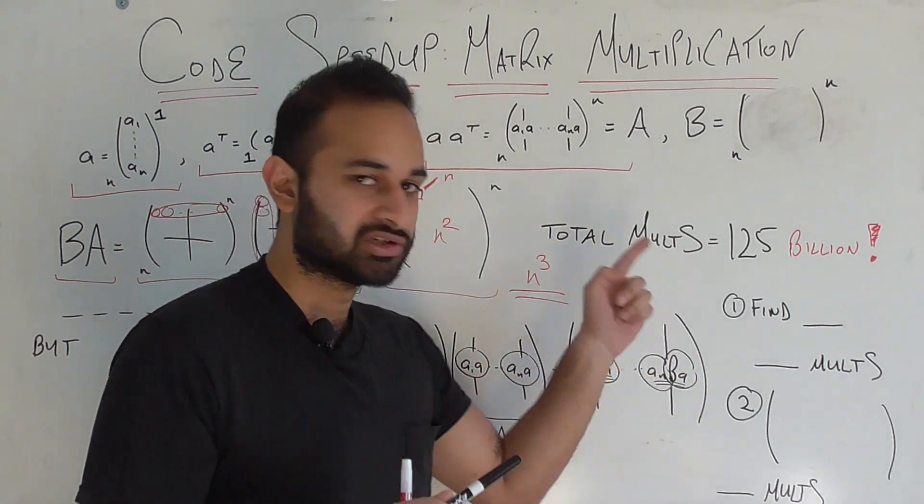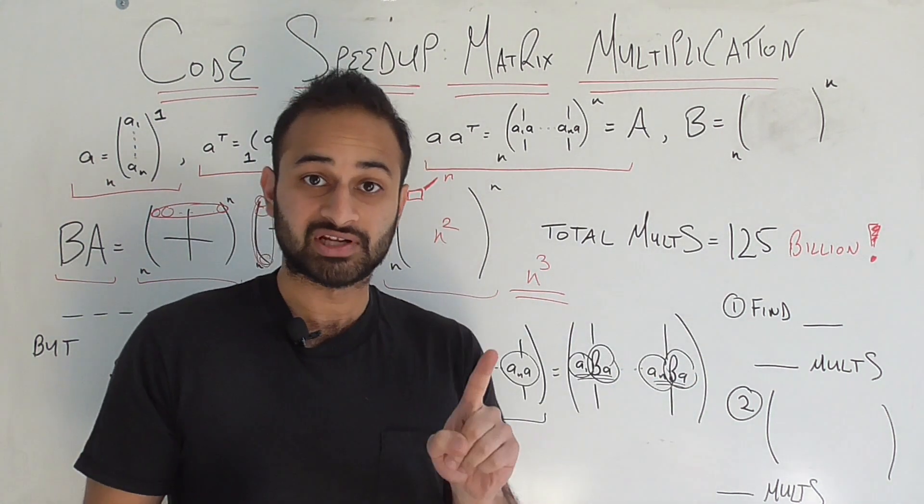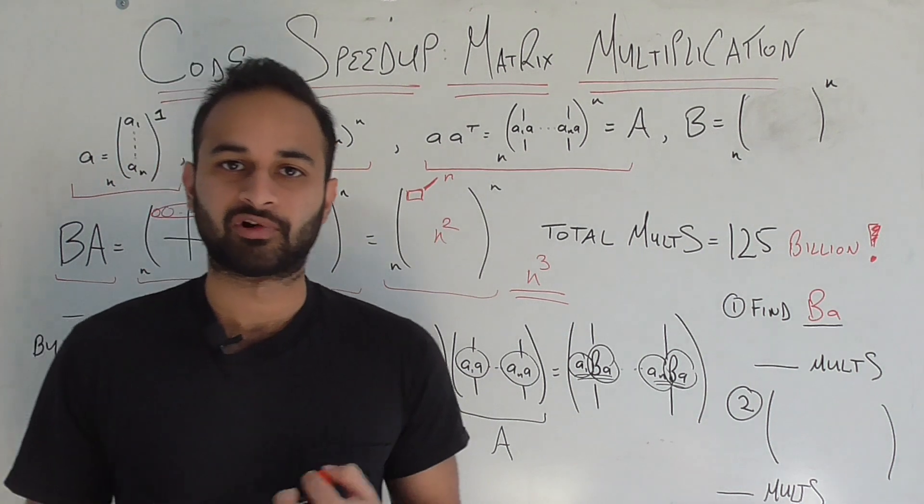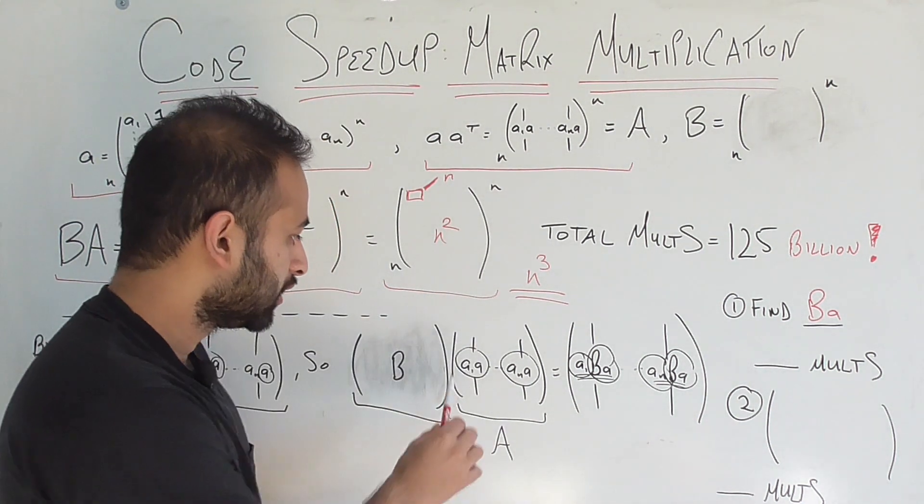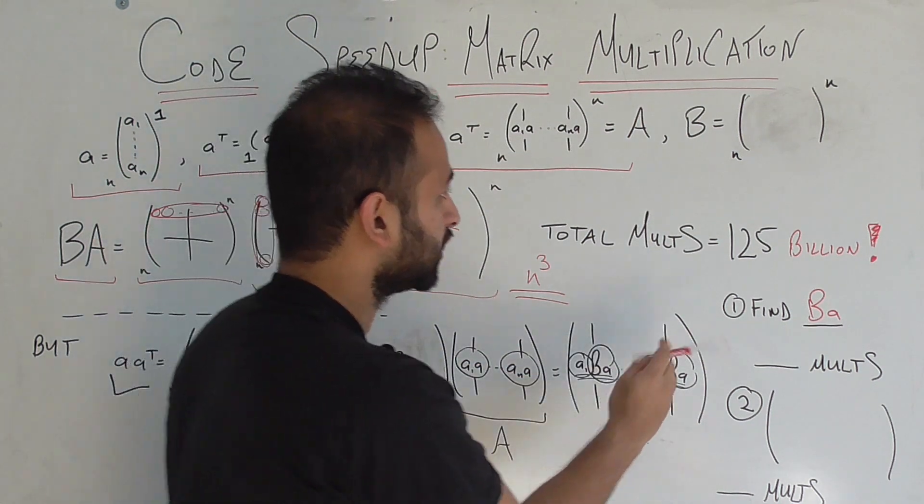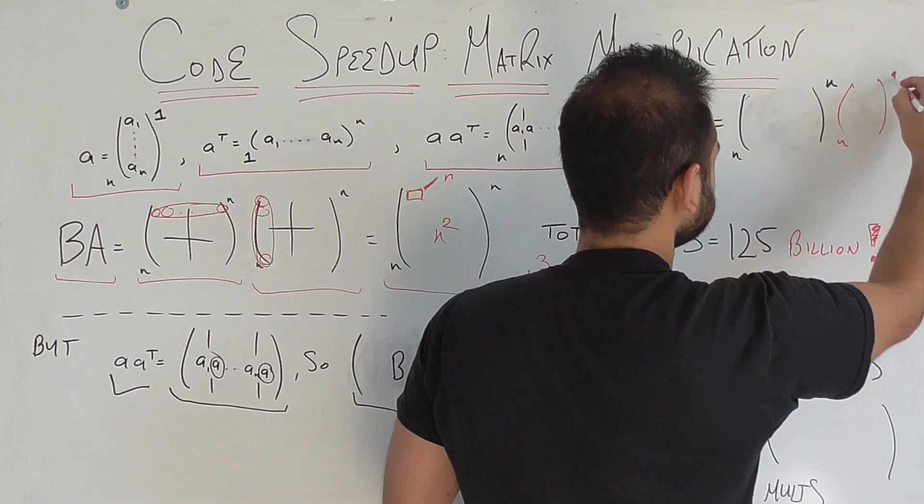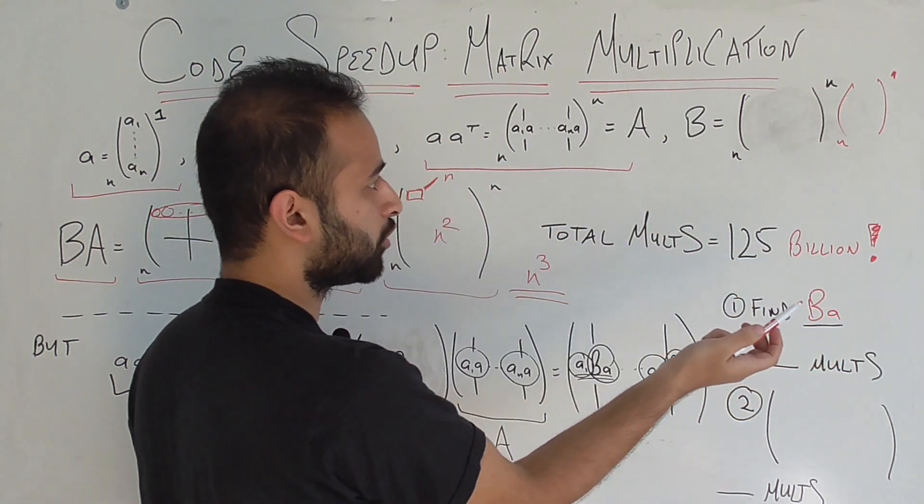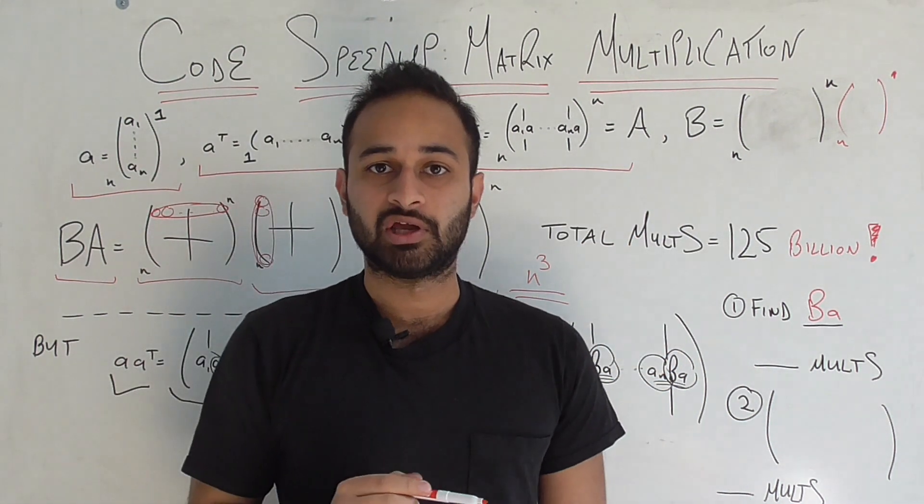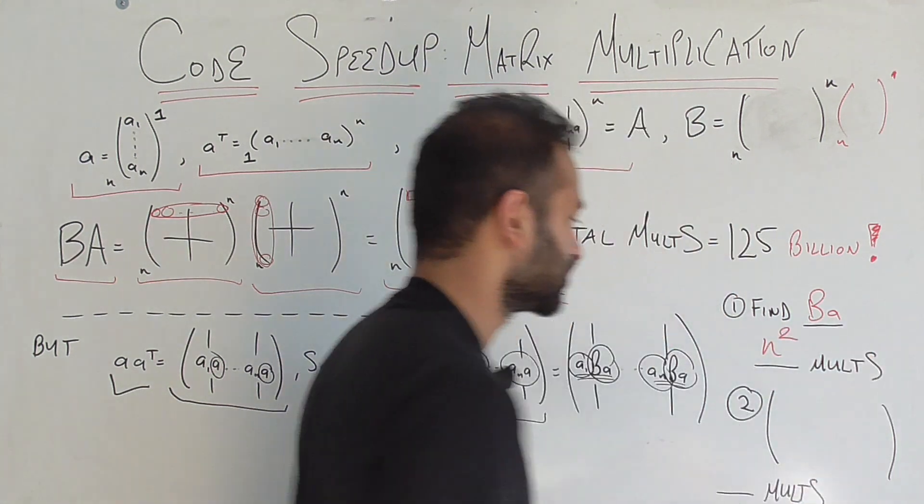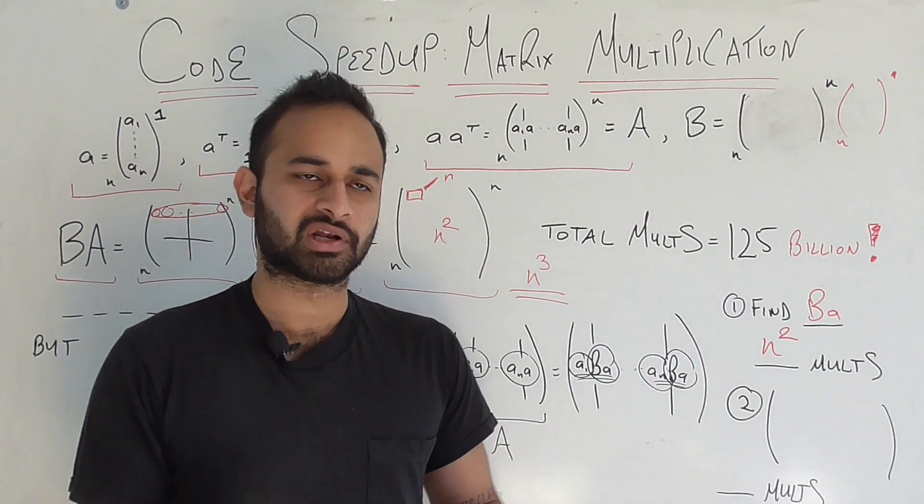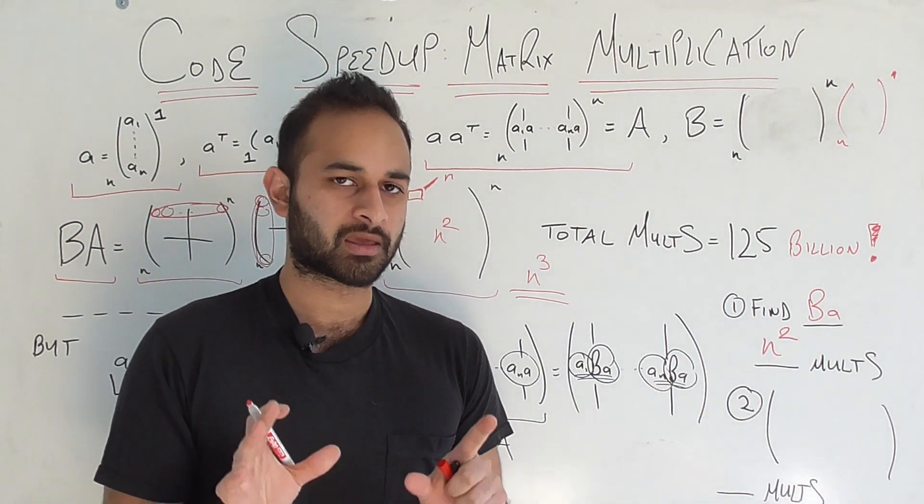So that means that we can just do this in two steps. As our first step we can say let's find this BA thing. And how many floating point multiplications is it going to take to find that? Well B is an n by n matrix and we're multiplying it by a vector that's n by 1. So each element of the final product is going to require n multiplications. And there's n products and values in the final product. So it's going to require n squared multiplications. So for the first step finding this BA is going to require n squared multiplications. So go ahead and pause and verify that for yourself if you need a second.